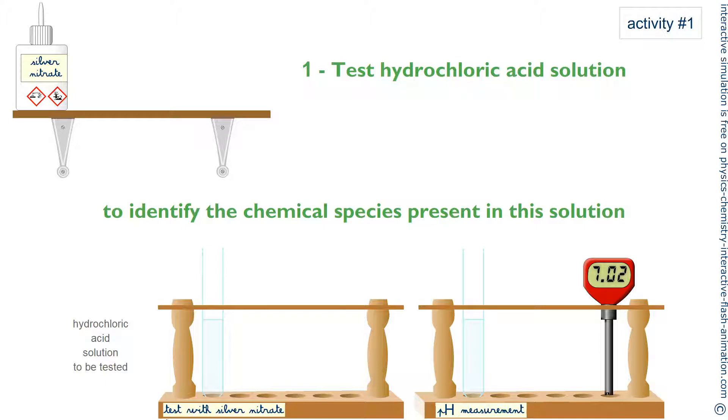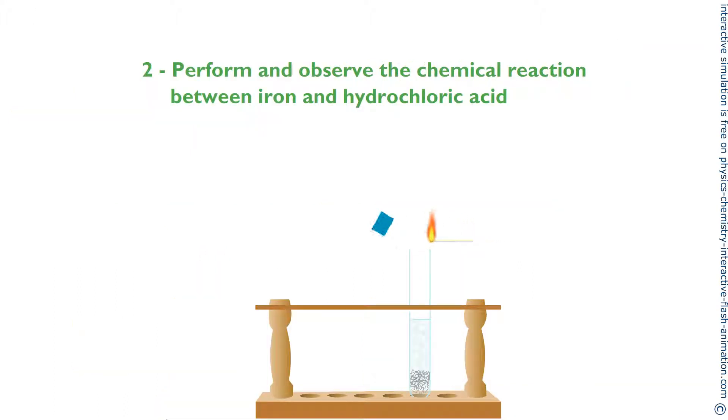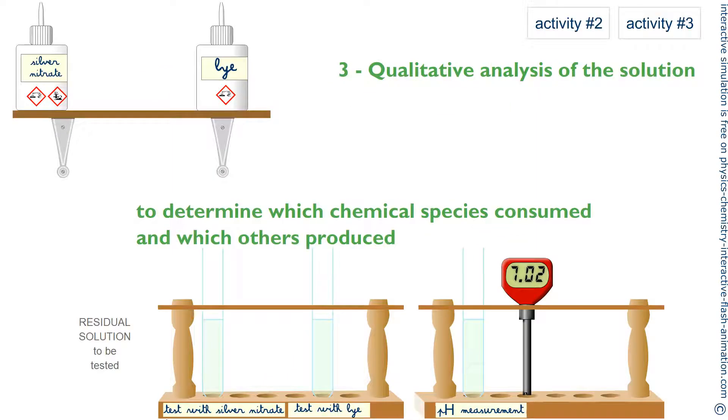First, testing hydrochloric acid to see the chemical species present in this solution. Second step, induce and observe the chemical reaction. Third step, determine what chemical species were formed and which were consumed.